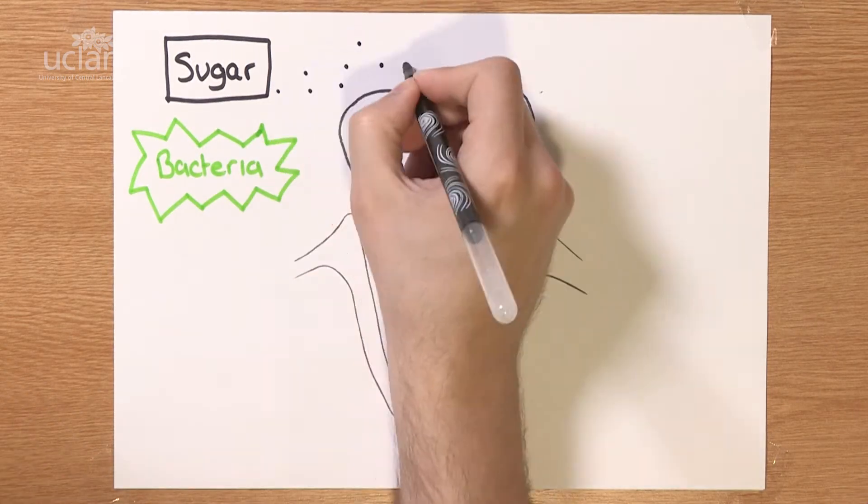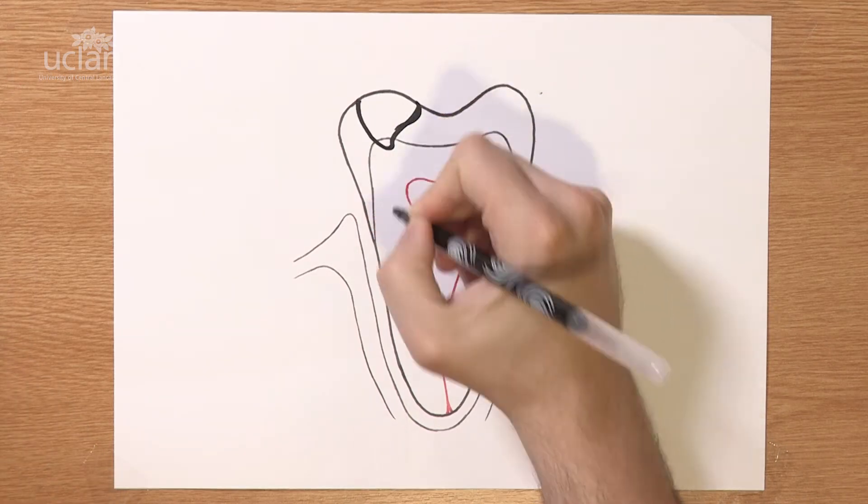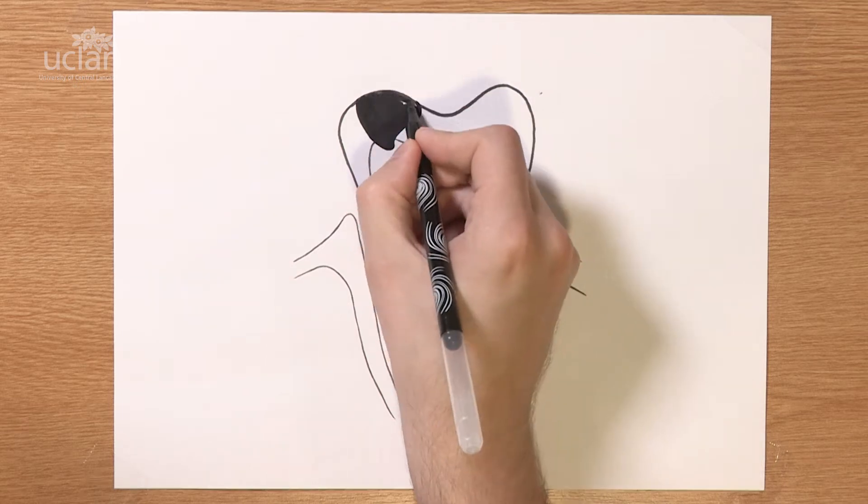When the bacteria in our mouths are exposed to sugar, it results in a hole or cavity, which is commonly called tooth decay. At this point, a regular filling could sort the problem out.